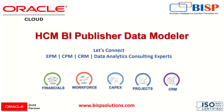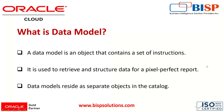Basically, a data model is an object that contains a set of instructions. The data model serves as a container which holds a certain set of instructions provided by the user, and based on those instructions it will act or behave. It is used to retrieve and structure data for a pixel-perfect report, meaning we are going to fetch or retrieve some data or information using the data model and generate reports based on that data.